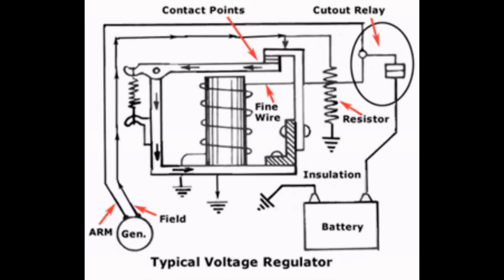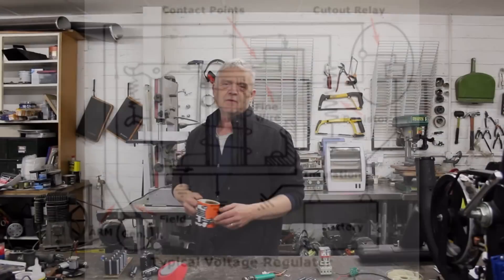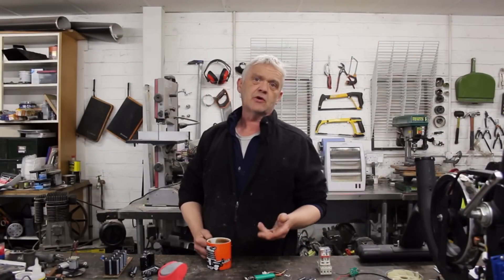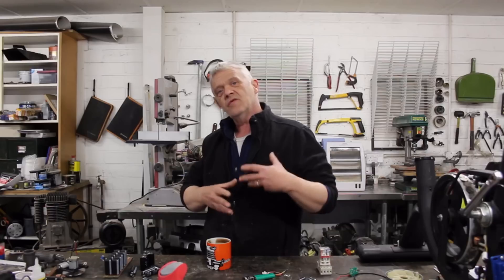That maintains a constant voltage in the system. Of course it's the same with the cutoff relay as it is with the voltage regulator - we can adjust the tension on that spring on the contact points so that we can therefore adjust the voltage that it will open at.